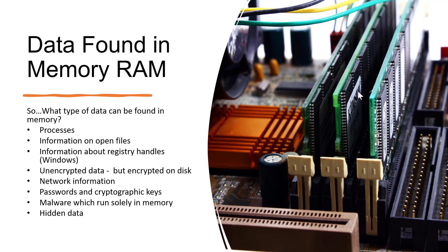What can we find in RAM? Any process running within the computer will be found in RAM. Information about any open files will be found in RAM. All registry files will be loaded in RAM. You will also find unencrypted data — meaning if a file is encrypted on disk, when it is loaded into RAM to run, it will be present as plain text. You will also find network information, passwords, malware, and hidden data.